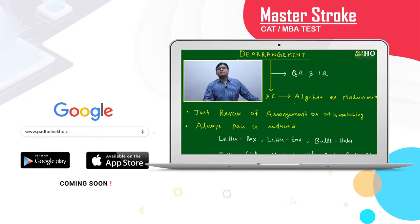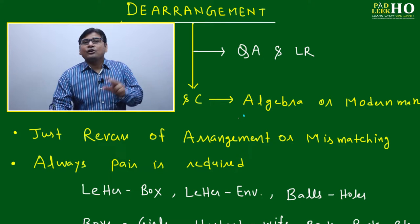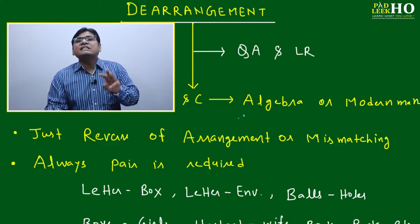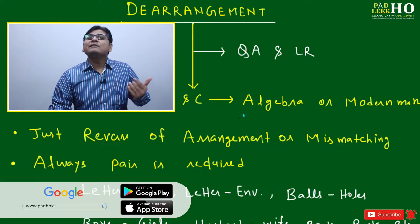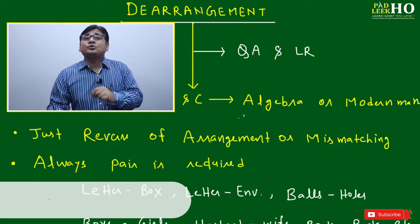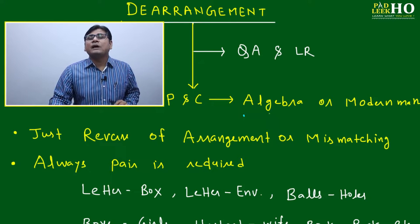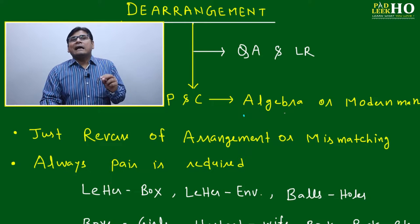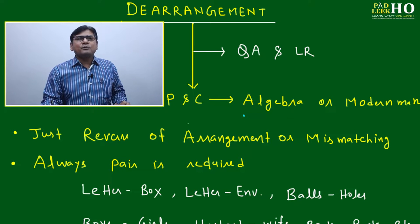This master's talk is related to de-arrangement. Just by the word itself, you can say it is the reverse of arrangement. Arrangement is a part of PnC — permutation, which is called arrangement. De-arrangement is generally ignored, but based on de-arrangement, very good questions are always asked in CAT. If you have not understood de-arrangement very well, you will make mistakes. This master's talk will try to understand de-arrangement in a little more clear way so confusion will not happen.